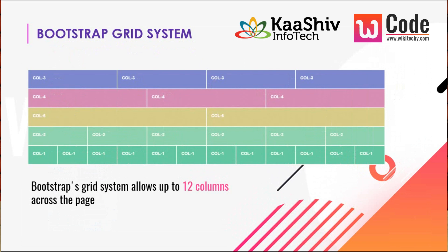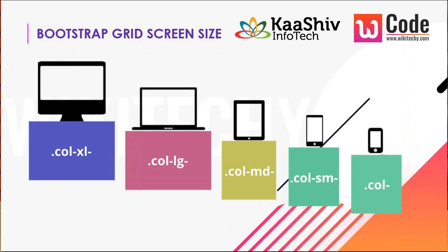Bootstrap works based on a grid system. The entire web page is divided into 12 columns. If you want 4 columns, use col-3; if you want 3 columns use col-4; for 2 columns use col-6; for 1 full column use col-12. You can subdivide the entire webpage into 12 columns to fit the content into the website.